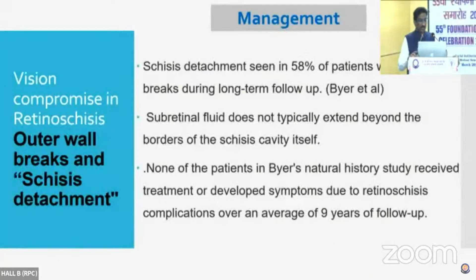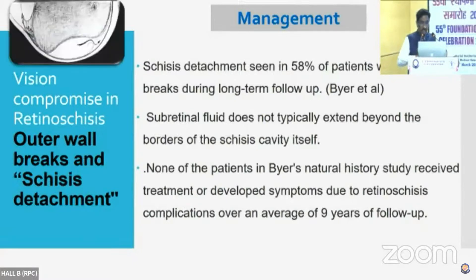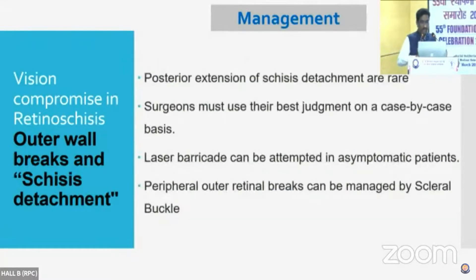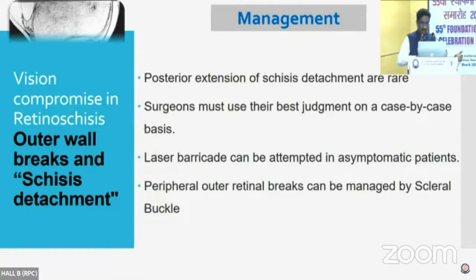In these patients, you need to follow them up regularly. A study by Bayer et al. showed that over a nine-year period, most of these patients did not progress. Hence in these patients you can follow up, and only if there is an extension, on a case-to-case basis, we may have to treat it. We should use our judgment — if progression is happening, we may have to either consider a laser barricade or consider a buckle in these patients if it is peripheral.